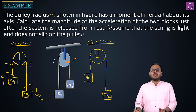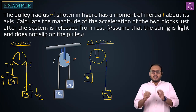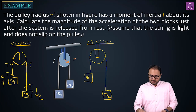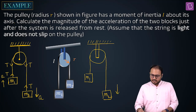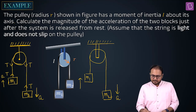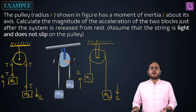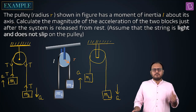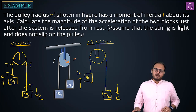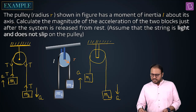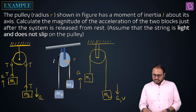The string is light and does not slip on the pulley. The moment you say that — this is the best part — the constraint is more powerful than anything. Will the acceleration be different? Is the string inextensible? So if the acceleration is a or the velocity is v, the acceleration is still a and the velocity is still v.